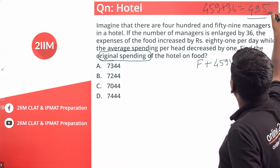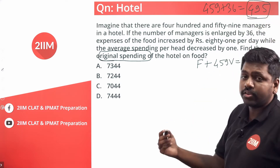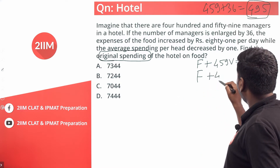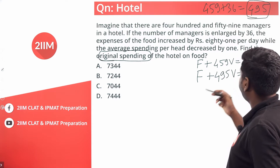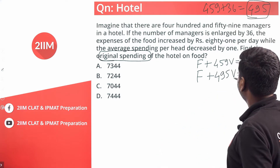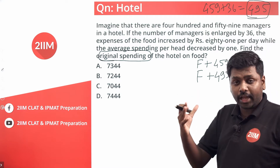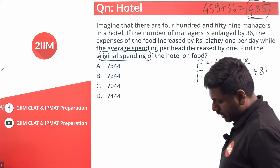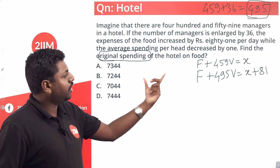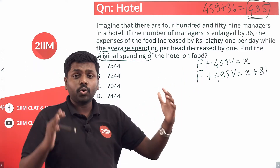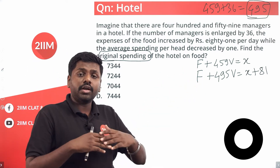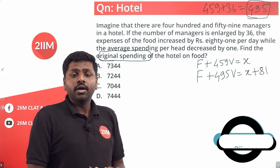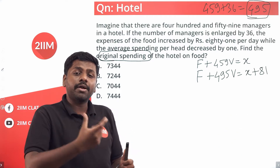The number of managers is enlarged by 36, so 459 plus 36 gives 495 managers total. The fixed cost stays the same, but there are now 495 plates of food to be prepared. The total expense increased by only 81 rupees, so the new total is x plus 81.